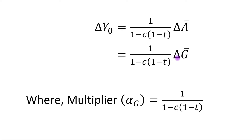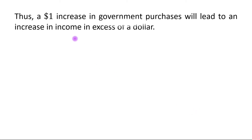The change in equilibrium level of output will be 1/(1 − MPC) times the change in Ā. In the next step, this change in Ā will be replaced by change in G̅, where the multiplier α_G equals 1/(1 − MPC). You should note that this MPC term represents MPC out of disposable income.